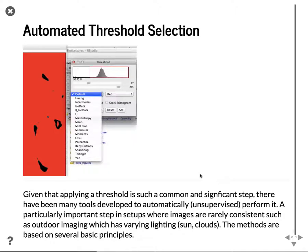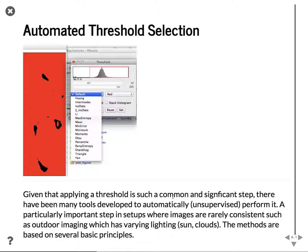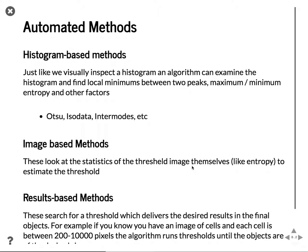For the first few examples, one of the things that can make our life much easier is automated threshold selection. If you use tools like ImageJ or Fiji, when you go to threshold, you see all of these different items in the menu that let you pick a threshold automatically. This is entirely unsupervised, and for images where illumination changes, this can work very robustly.